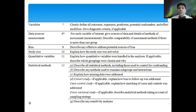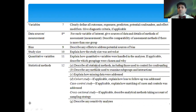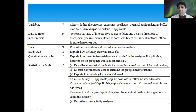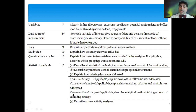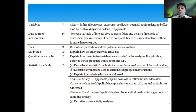Let's talk about how to define your variables in the methods section: data use, data source, different biases, and study size. You can use these things in your proposal as well as your manuscript. If you start answering these questions, you can easily fill up the initial few pages of your manuscript. Remember, these apply differently depending on your study type. Pick and choose from the checklist based on whether you're doing a cohort, case control, or cross-sectional study.